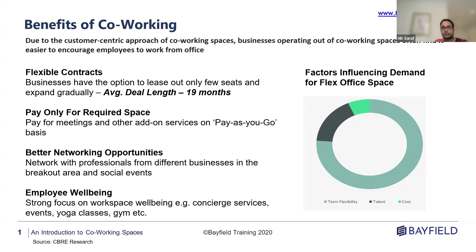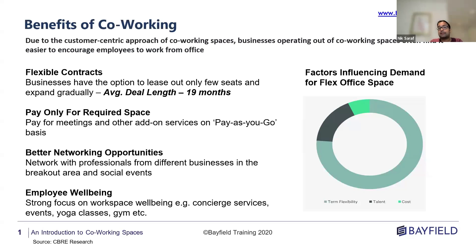Third, better networking opportunities. In a traditional office setup you meet colleagues who work in the same business. In a co-working space you meet people from different businesses and different industries, giving you a lot of chance to network. Many co-working providers hold networking sessions on a regular basis. Lastly, employee well-being: while some traditional offices now offer on-site gyms or swimming pools, it's a standard norm within co-working spaces. From speaking to people in the industry, because there's such a strong focus on well-being, it's much easier to motivate employees to come back to the office rather than work from home.